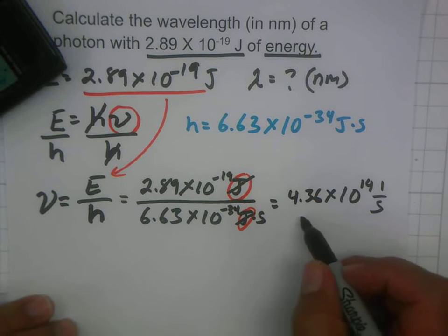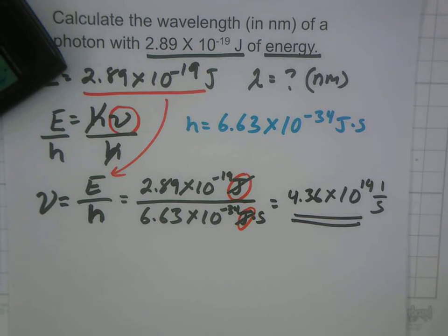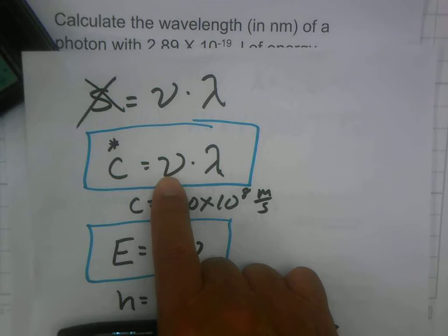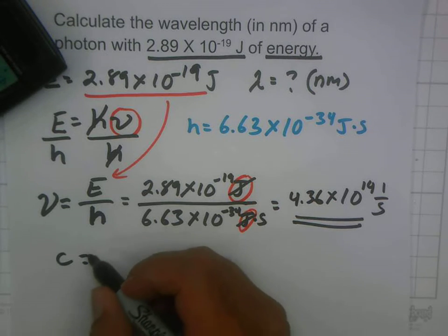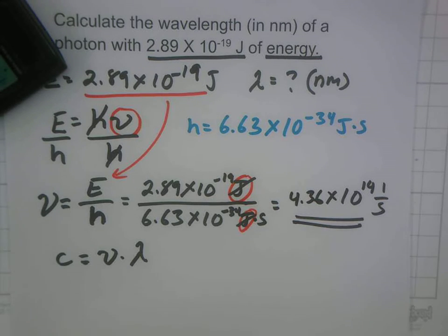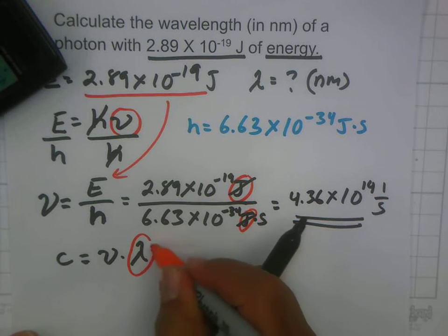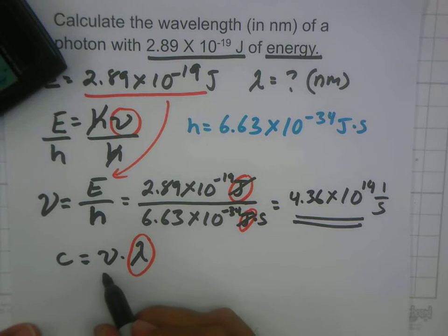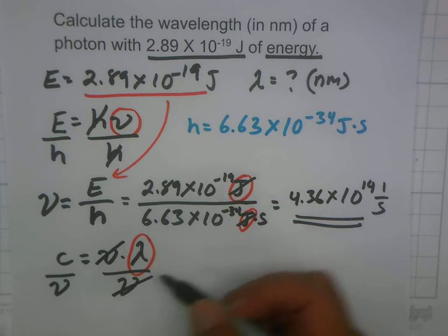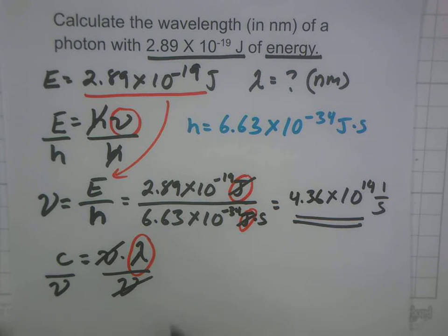Now we have our frequency. The question asks for wavelength, lambda. Using our second equation: c equals frequency times wavelength. We want to solve for wavelength, so we divide both sides by frequency. The frequencies cancel and we're left with: wavelength equals c divided by frequency.